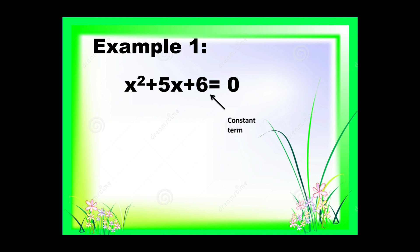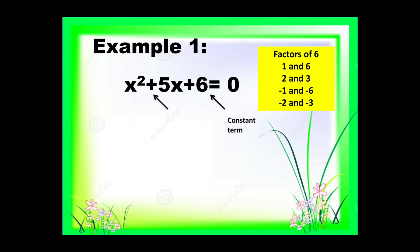The factors of 6 are 1 and 6, 2 and 3, negative 1 and negative 6, and negative 2 and negative 3. Our guide is the sign of the middle term, which is positive. Since we have positive, we are going to think of numbers when you multiply the answer is positive 6, and when you add the answer is positive 5. We have 2 and 3: 2 plus 3 is equal to 5, and 2 times 3 is equal to 6.